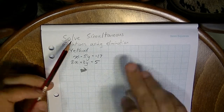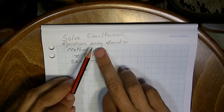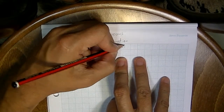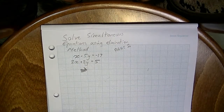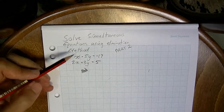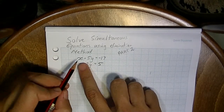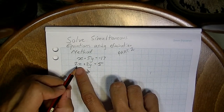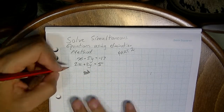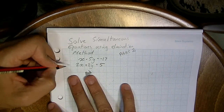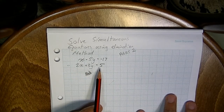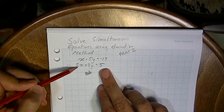In this video we're going to be solving simultaneous equations again using the elimination method. This is part two of the elimination method. Remember how it works — you can either add or subtract one equation from the other, with the hope of eliminating either x or y. We've got two equations: x minus 5y equals negative 17, and 2x plus 3y equals 5.